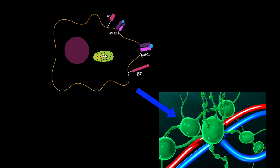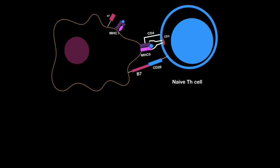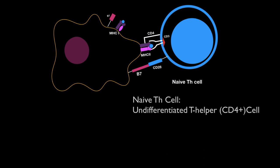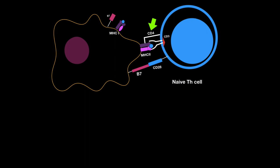Now it goes to the lymph node and presents the peptide on the MHC class 2 molecule. MHC class 2 molecules can only bind to naive T-helper cells, because naive T-helper cells are also called CD4 cells. CD4 is what actually docks to the MHC class 2, anchoring the cell towards it so they can bind. When they bind, they stimulate CD3, and CD3 then sends a positive signal towards the cell.